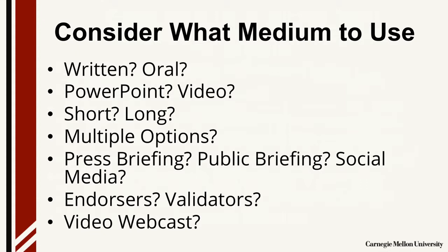Next, consider what medium to use to communicate your message. Should it be written, oral, PowerPoint or video, short or long? Should you combine a number of these and produce multiple products using multiple options for dissemination? When you release your report, do you have a press briefing — which is typically press only and which few reports deserve — or a public briefing that brings together not only press but stakeholders interested in the issue? And how should you use social media to attract an audience to your briefing and disseminate your report to those who cannot attend an event? Should you have endorsers or validators at your briefing representing key constituencies to show they support your report? And should you video-webcast your public events so that others can view them at a later date? This dissemination strategy is important to consider well before your event for optimal press coverage and related public discussion.